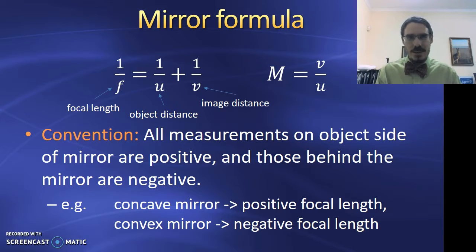Now, because concave and convex mirrors behave differently, we need some convention so that this formula always works for us. And our convention is that all measurements on the object side of the mirror are positive, and any measurement behind the mirror is negative. Be careful. For a convex mirror, the focal point is actually behind the mirror, which means F is negative for a convex mirror, a diverging mirror.